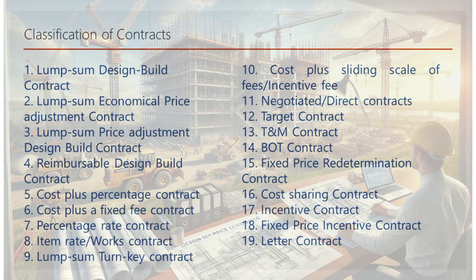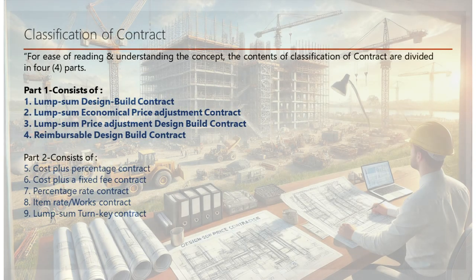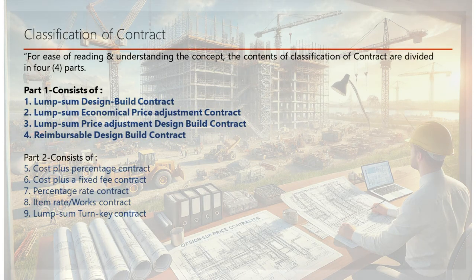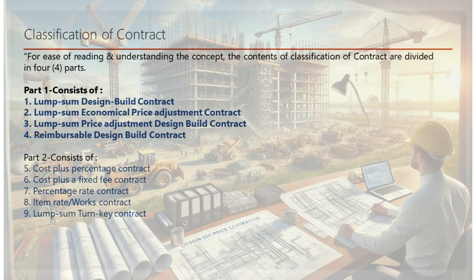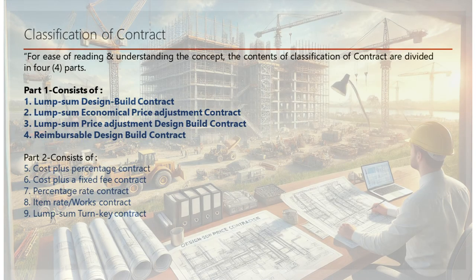To make this complex topic easier to digest, we've divided our discussion into four parts, each covering specific types of contracts. Part one will focus on: 1. Lump-sum design-build contract. 2. Lump-sum economical price adjustment contract. 3. Lump-sum price adjustment design-build contract. 4. Reimbursable design-build contract. These contracts are often used when a project requires a clear, straightforward approach to pricing and execution. We will explore the nuances of each type, helping you determine when and how to use them effectively.